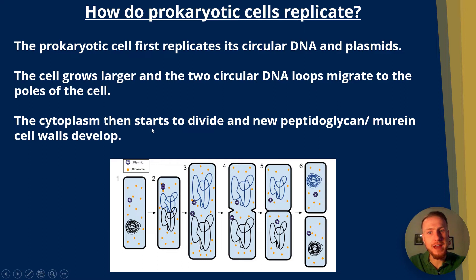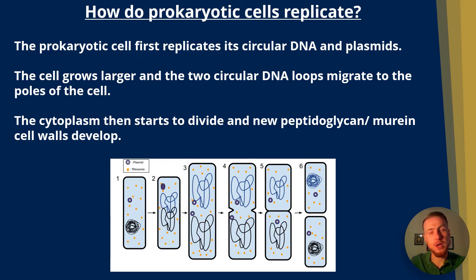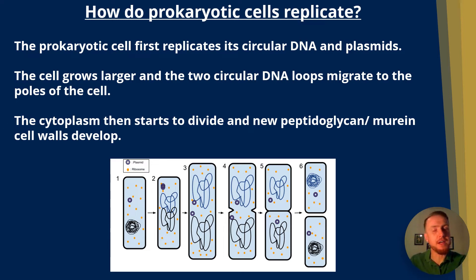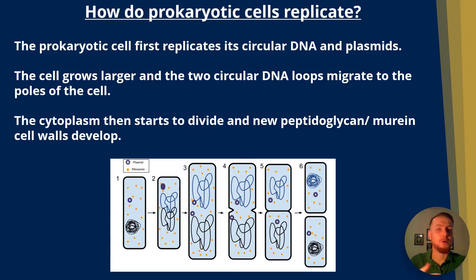Next, the cytoplasm starts to divide, and the new peptidoglycan — or murine — cell walls develop. The cell wall of bacterial cells is softer than those of plant cells, because bacterial cell walls are made of peptidoglycan whereas plant cell walls are made of cellulose. Plants need really strong rigid cell walls to support the plant so they can absorb as much light as possible for photosynthesis, whereas because bacteria are usually unicellular, they don't really have that issue.